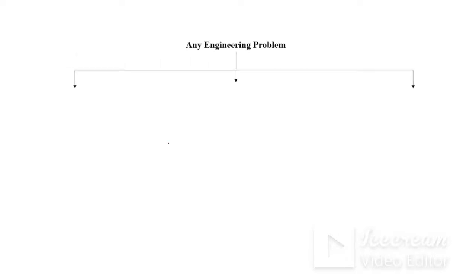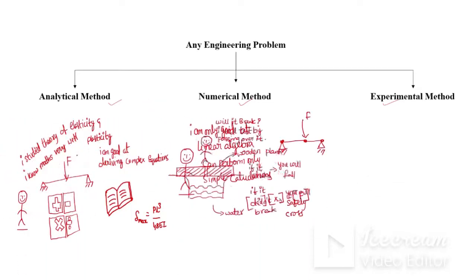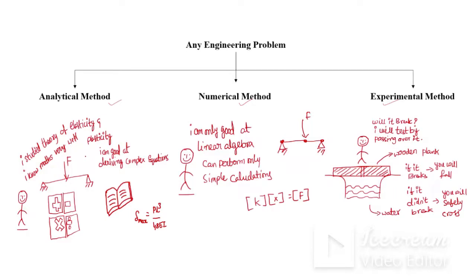Coming to technical terms, any engineering problem can be solved in three ways: the analytical method, the numerical method, and the experimental method. Mapping to the story: the scenario where you solved the system using complicated equations that took a lot of time and knowledge is an example of the analytical method.